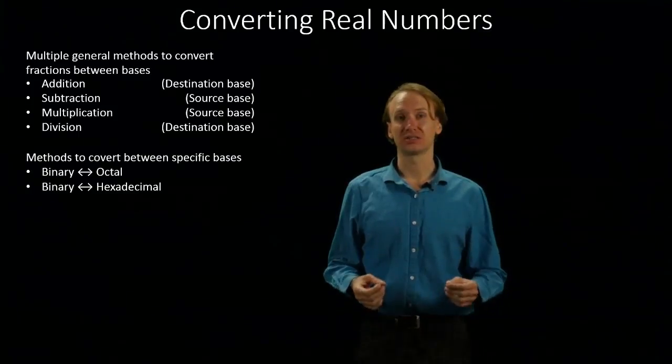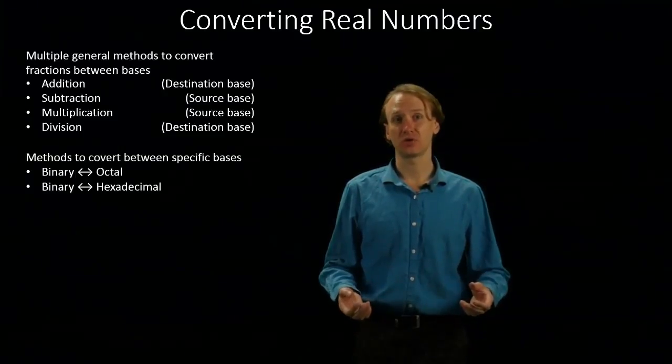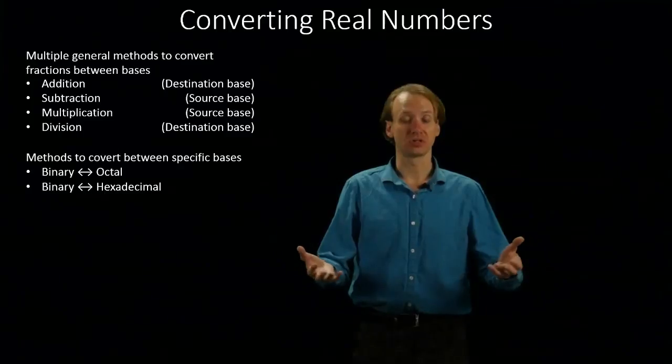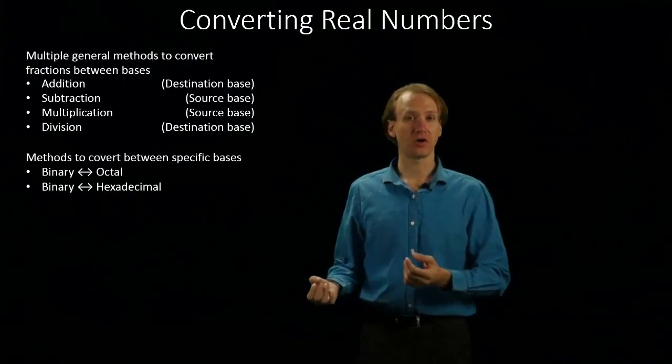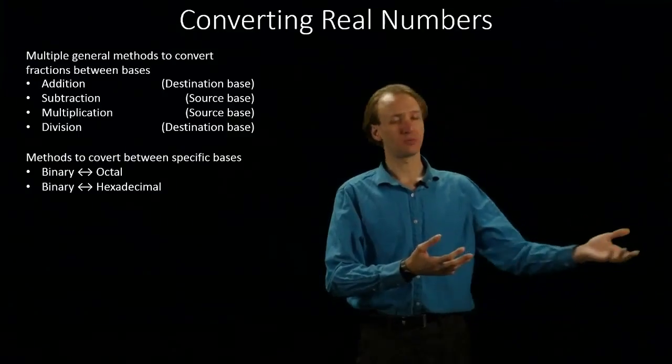Our addition and subtraction methods work exactly the same as they did before. We will have positive exponents representing all the numbers in the whole number part of our real number. Then we get negative exponents for all the numbers in our fraction.